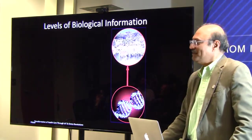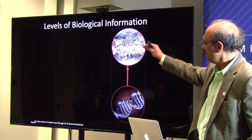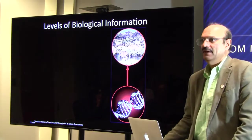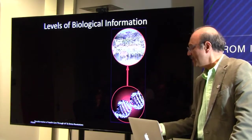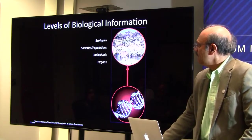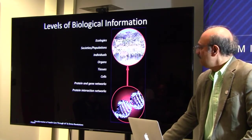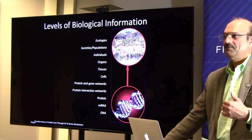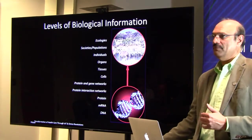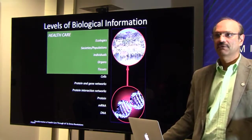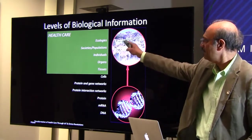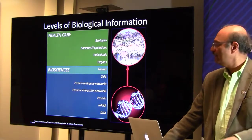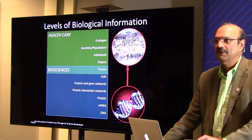Let me briefly talk about the levels of biological information. You can go from the society level all the way down to the DNA level — ecologies, societies, individuals, organs, tissues, cells, protein and gene networks, protein-protein interaction networks, proteins, mRNA, and finally DNA. Computer science plays a role everywhere across these levels. In my division, healthcare operates around the individual and organ level, while bioscience IT extends from there down to DNA, and health IT has some overlap at the tissue level.